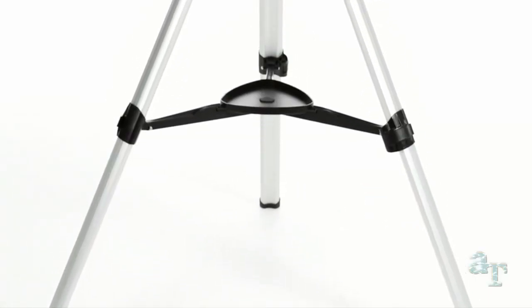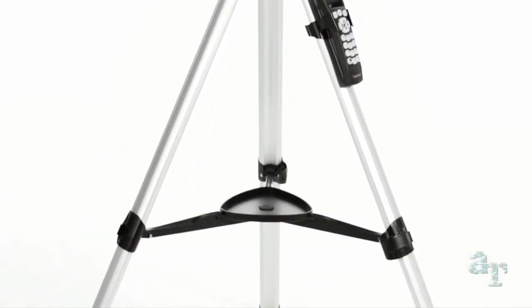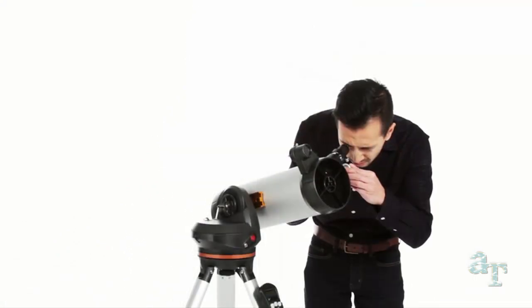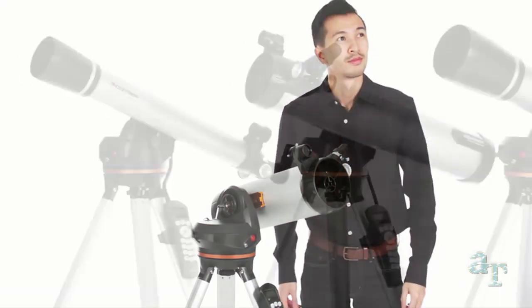A computerized telescope takes the guesswork out of astronomy, finding and centering objects in the eyepiece for you automatically. That means you and your friends can get more out of each stargazing session and spend more quality time viewing objects.